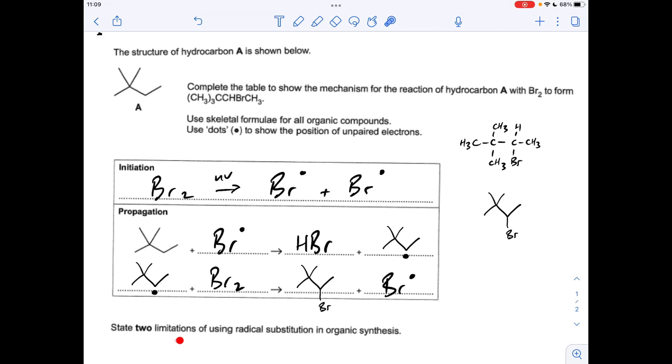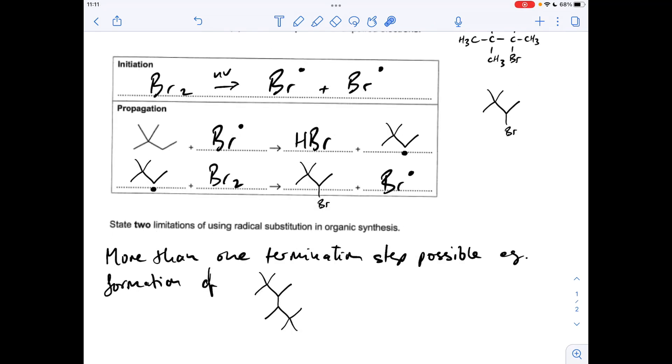So the kind of things I would be saying here would be there's more than one termination step possible. One of the termination reactions would involve the reaction of two of these radicals, and that would generate a very odd looking hydrocarbon which is obviously not this product here. So that's obviously a limitation. More than one termination step possible, for example, formation of this thing here, which is due to two of these combining.